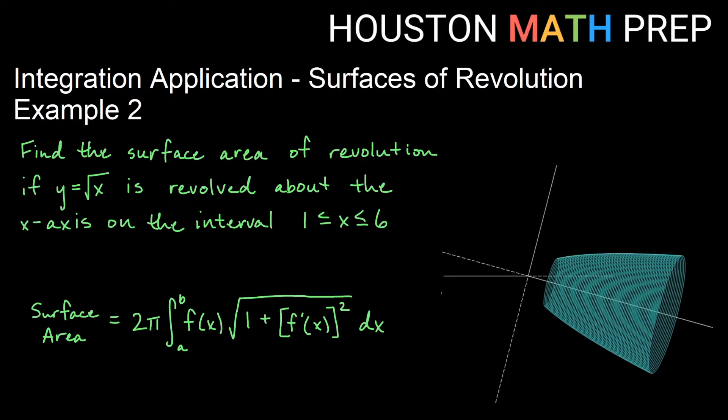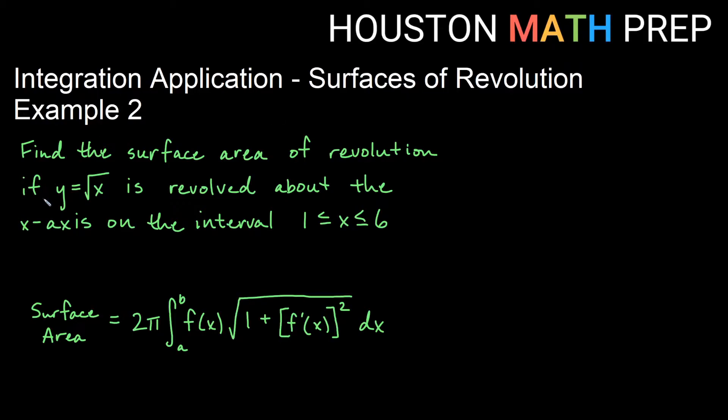We get to this surface and I've got my surface area formula written down in the corner. Let's go ahead and set up the pieces that we need. Our function is f of x equals square root x. We could also think of that as x to the one-half power because we're going to need to do the derivative for our formula.